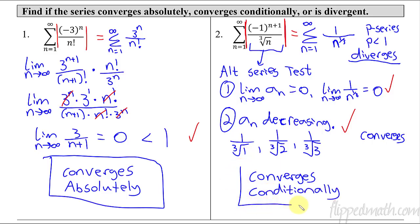The original series converges, but the absolute value diverges. So that leaves us with conditional convergence — it converges conditionally. Whether you say 'conditional convergence' or 'converges conditionally,' it means the same thing. Different textbooks and teachers may say it differently.